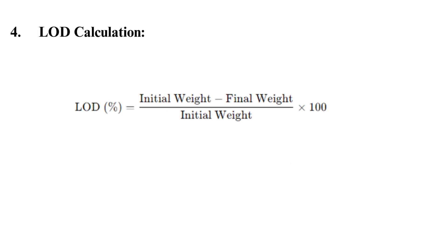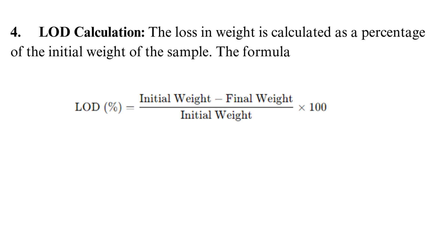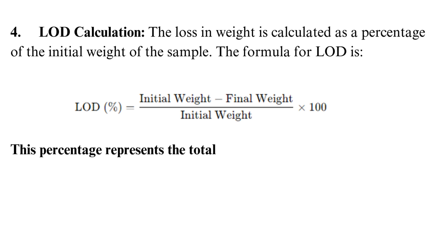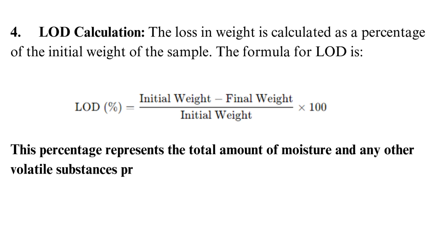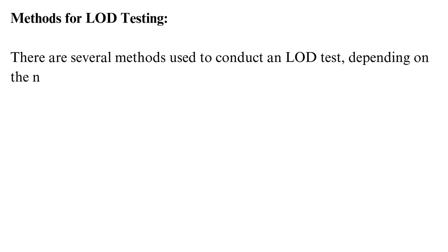LOD calculation: The loss in weight is calculated as a percentage of the initial weight of the sample. The formula for LOD is: (initial weight − final weight) / initial weight × 100. This percentage represents the total amount of moisture and any other volatile substances present in the API. There are several methods used to conduct an LOD test, depending on the nature of the API and the equipment available.